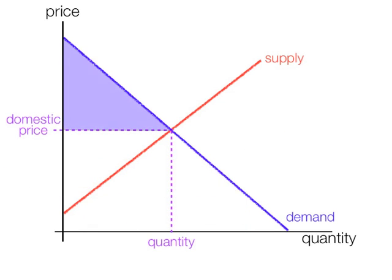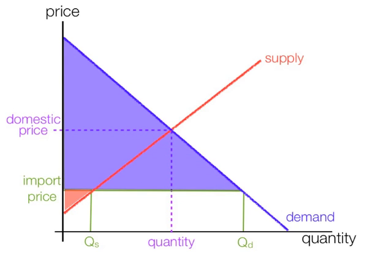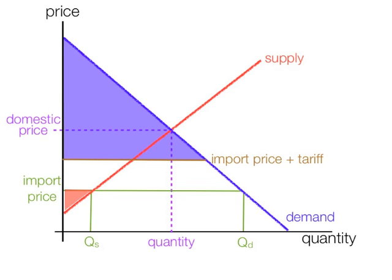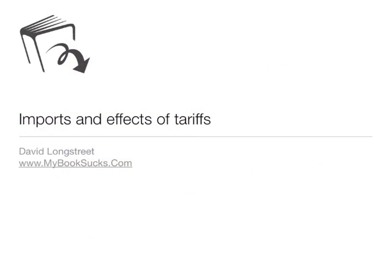To review quickly: that is consumer surplus, that's producer surplus. We added an import price — producer surplus shrunk, consumer surplus increased dramatically. The government imposed a tariff — consumer surplus shrunk, producer surplus increased. That's the tax revenue, and the gray area is deadweight loss to society. And this is imports and effects of tariffs.